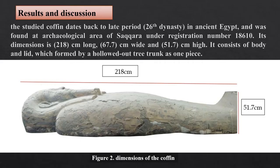Results and Discussion. The studied coffin dates back to the 26th dynasty in ancient Egypt and was found in the archaeological area of Saqqara under registration number 18610. Its dimensions are 218 cm long, 67.7 cm wide, and 51.7 cm high. It consists of a body and a lid, formed from wood treated as one piece. Figure 2 shows the dimensions of the coffin.